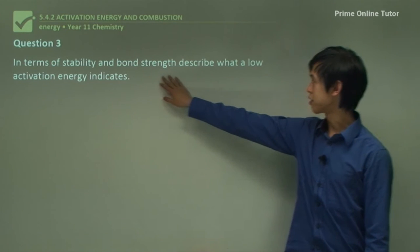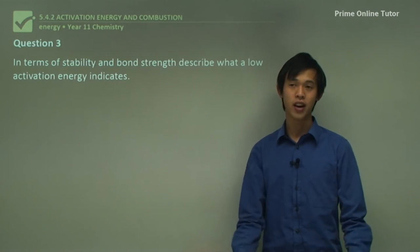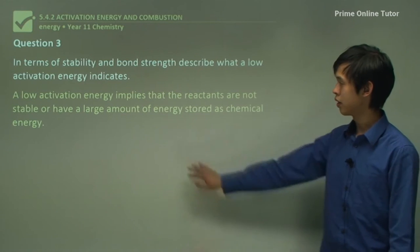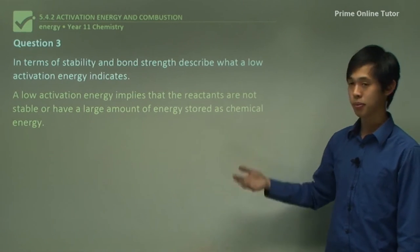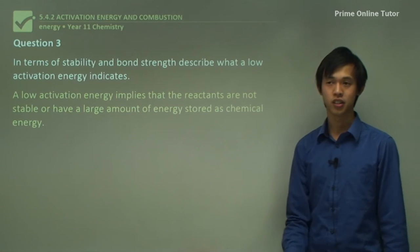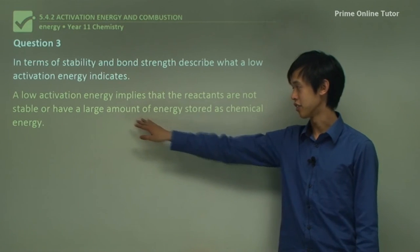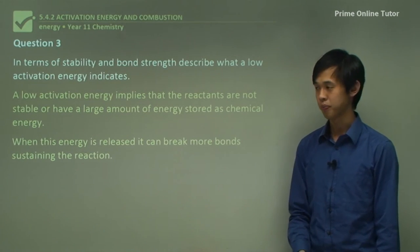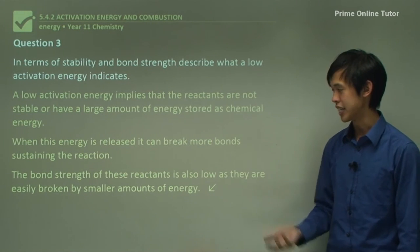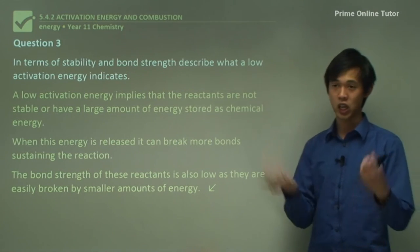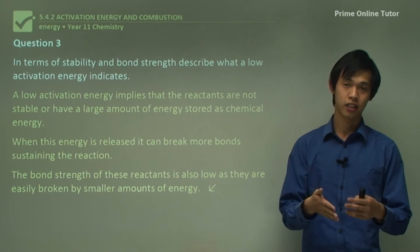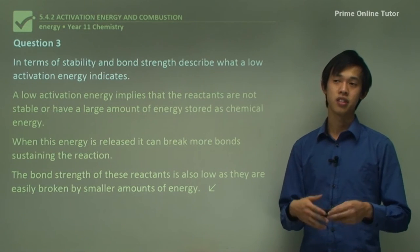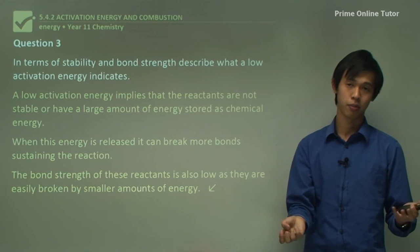Question three: in terms of stability and bond strength, describe what a low activation energy indicates. A low activation energy implies that reactants are not stable, or have a large amount of energy stored as chemical energy. When this energy is released, it can break more bonds, sustaining the reaction. The bond strength of these reactants is also low, as they are easily broken by small amounts of energy. So we can say the bond strength is low, the chemical energy is very high because they emit a lot of energy, and the stability is low because it takes only a little energy to break up those bonds.